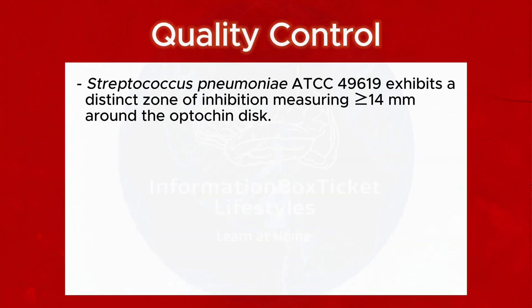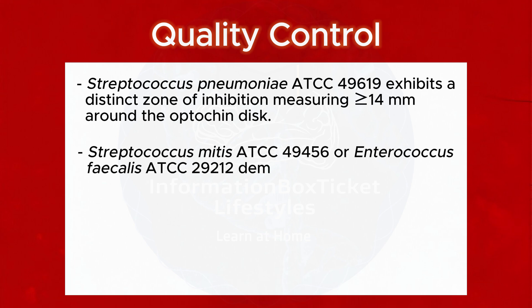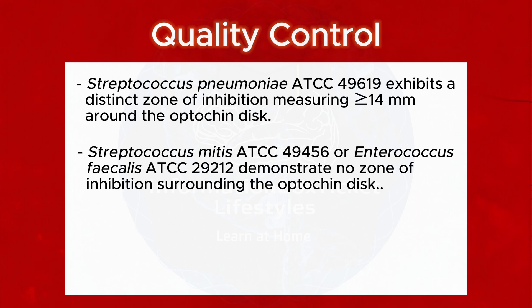Quality Control: Streptococcus pneumoniae ATCC 49619 exhibits a distinct zone of inhibition measuring ≥14 mm around the Optochin disc. Streptococcus mitis ATCC 49456 or Enterococcus faecalis ATCC 29212 demonstrate no zone of inhibition surrounding the Optochin disc.